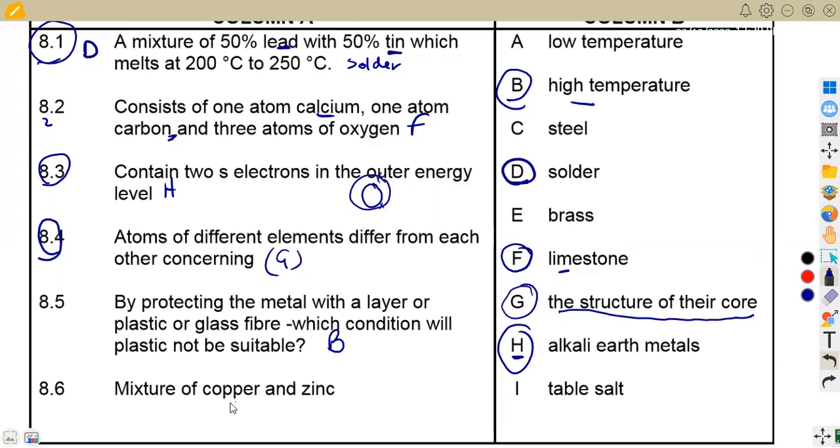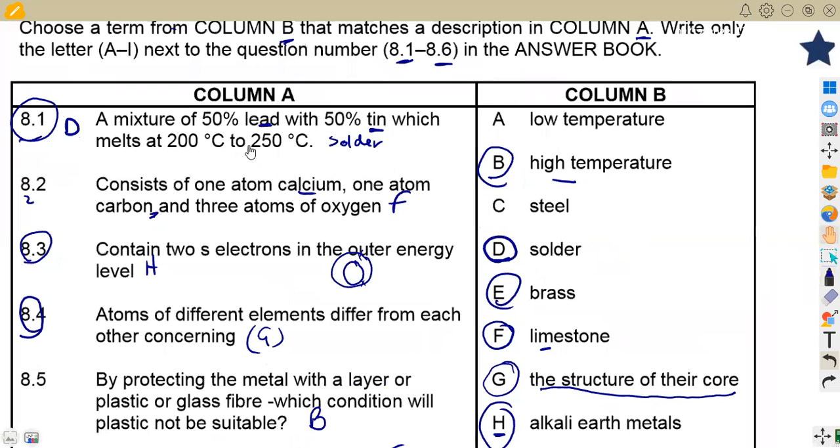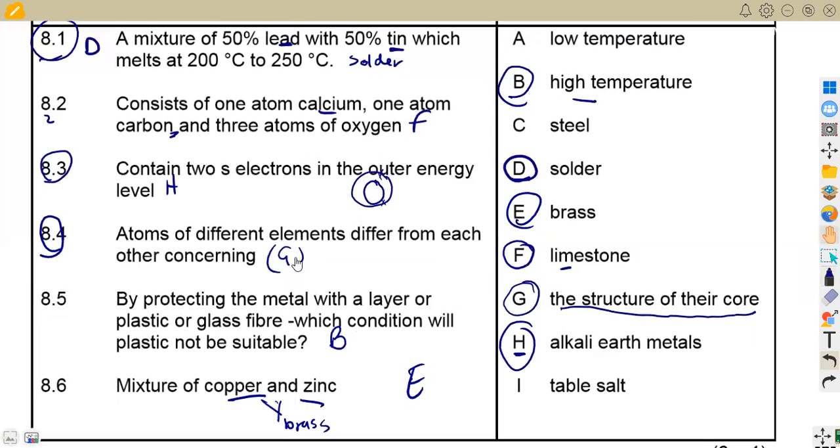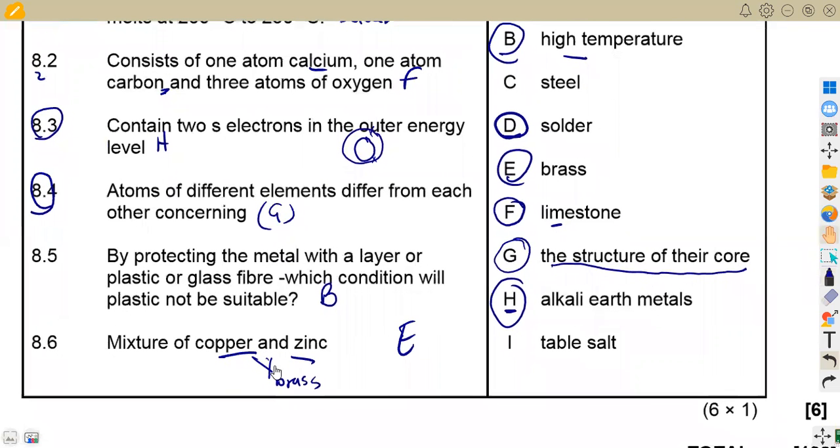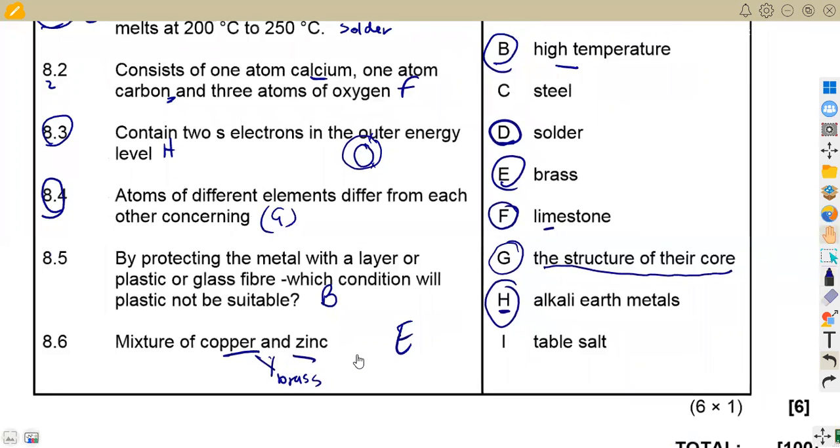The mixture of copper and zinc, if you mix copper and zinc, what you get, that's a brass. So a brass is what? It's E. But if you are to mix here, lead and tin, we saw that one is a solder, not a brass. So the brass, it's on 8.6. So that was it on chemistry.